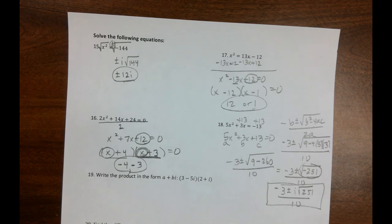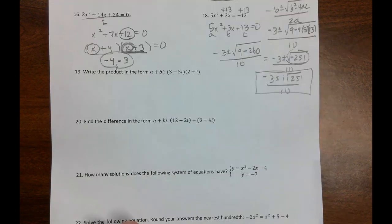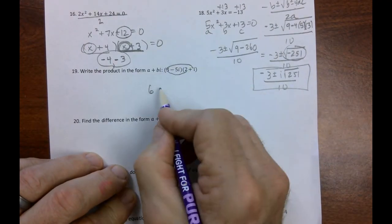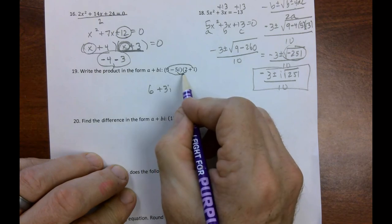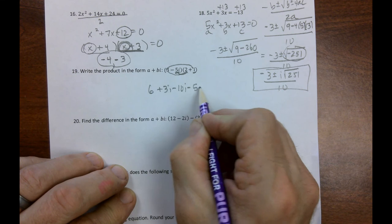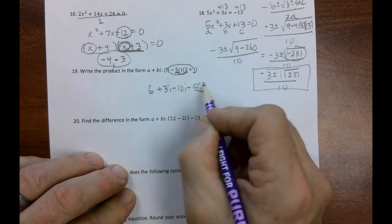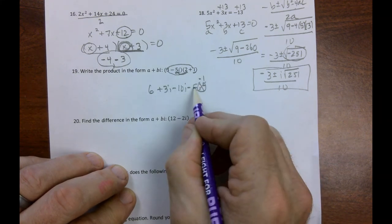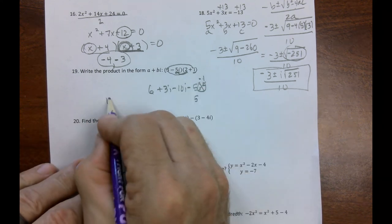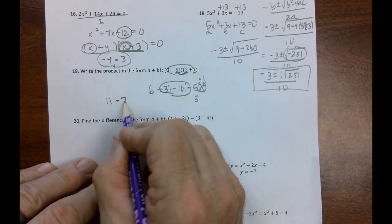All right. 14 minutes. We got a little bit left. So, I'm going to try to foil this out. 3 times 2 is 6. 3 times i is 3i. Negative 5 times 2 is negative 10i. Negative 5i times i is negative 5i squared. Remember, i squared is the same thing as a negative 1. So, this is negative 5 times negative 1, which is 5. 5 times 6 is 11. And this is negative 7i. Done.